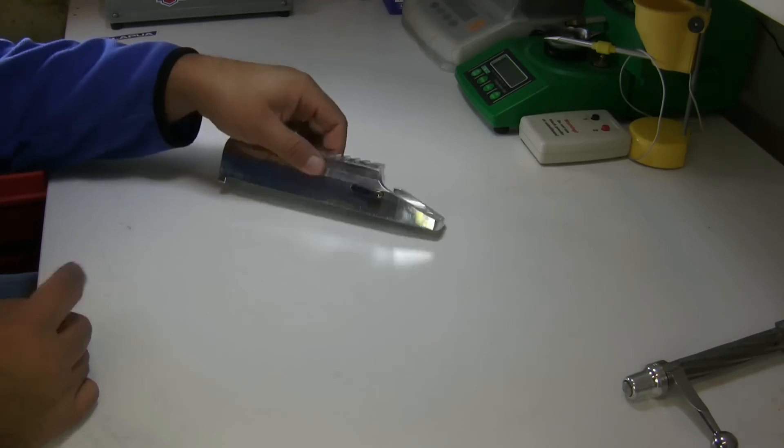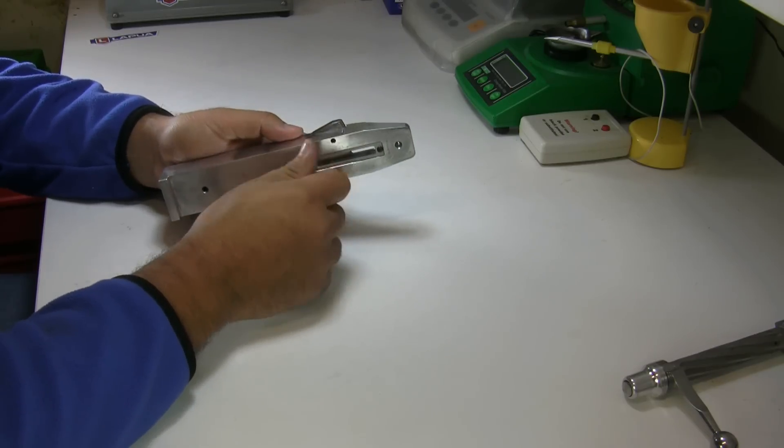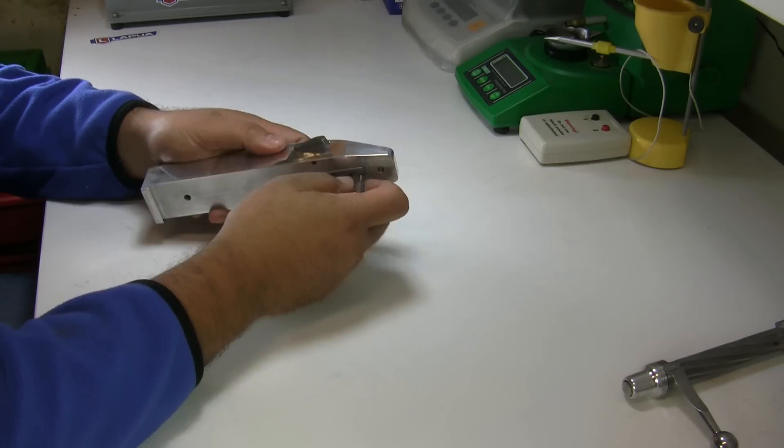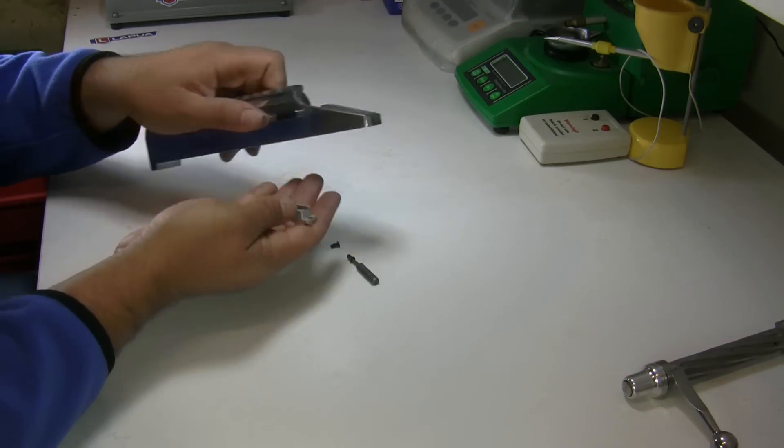The first thing that we need to do is remove the screws from the hanger. These are just snug on here, and then you can pull the hanger out.